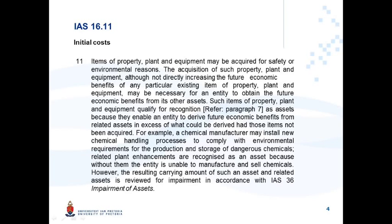The relevant paragraph from IAS 16 is paragraph 11. Items of property, plant and equipment may be acquired for safety or environmental reasons. The acquisition of such property, plant and equipment, although not directly increasing the future economic benefits of any particular existing item of property, plant and equipment, may be necessary — that is a key word. These costs are necessary for an entity to obtain the future economic benefits, and such items qualify for recognition because they enable an entity to derive future economic benefits from the related asset in excess — also a key word — in excess of what could be derived had those items not been acquired.